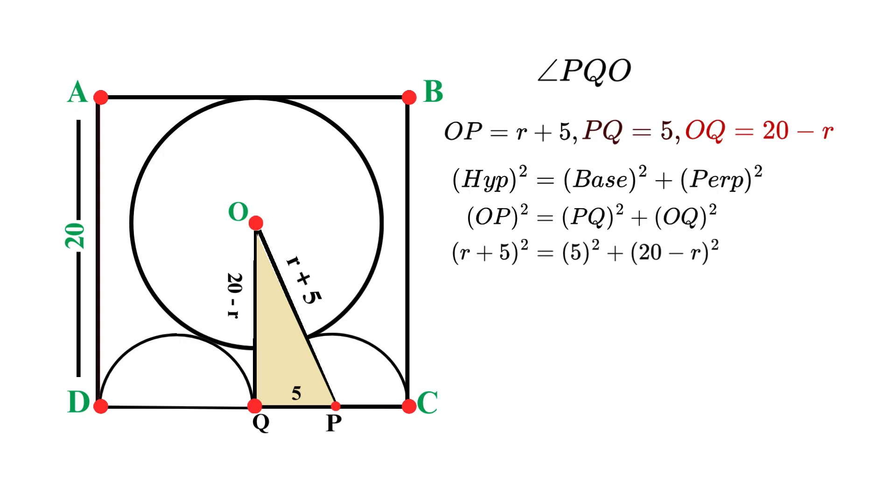Now we need to expand both sides using the binomial expansion formula. Remember, (A + B)² equals A² + 2AB + B². Let's start with the left side. (r + 5)² equals r² + 10r + 25. For the right side, we have 5², which is 25, plus (20 - r)². Now expand the second part. (20 - r)² equals 400 - 40r + r². So the entire right side becomes 25 + 400 - 40r + r², which simplifies to 425 - 40r + r². So the equation now looks like this: r² + 10r + 25 = 425 - 40r + r².